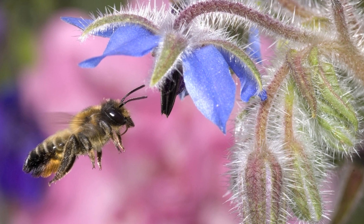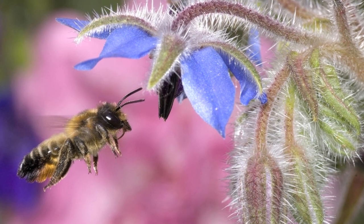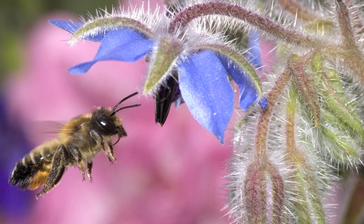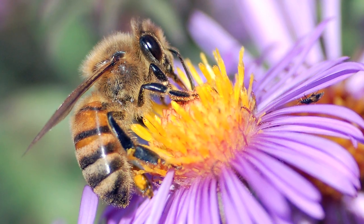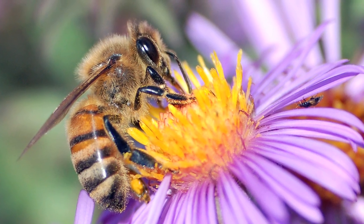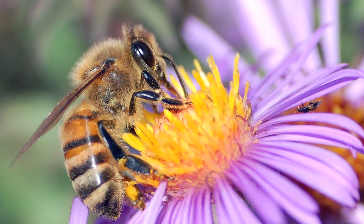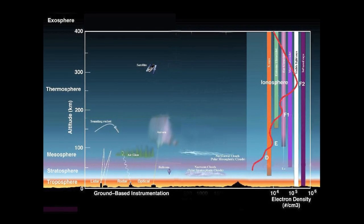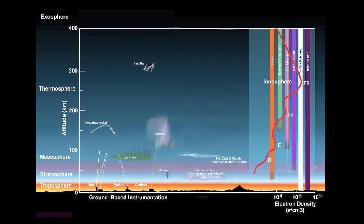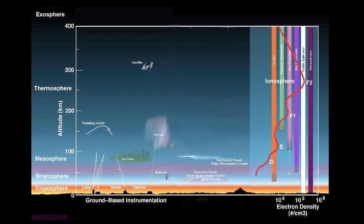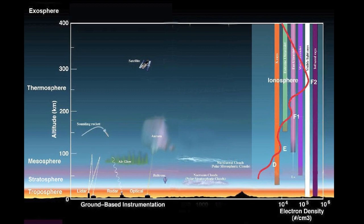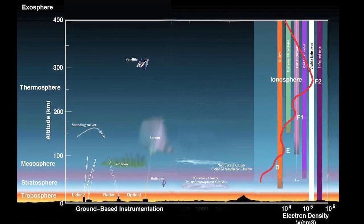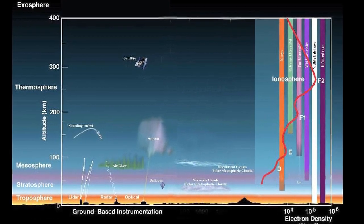Bees always have a greater electrical potential than flowers, so there are always electrical fields connecting bees and flowers. When a bee pollinates a flower, there is a quite measurable and very exciting exchange of electric charge between the two. The more we look at what nature is actually doing, the more we see that charge neutrality seldom exists in any dynamic environment. Coming back to the ionosphere, I would say that the shells of free electrons are not missing from regions of the ionosphere.